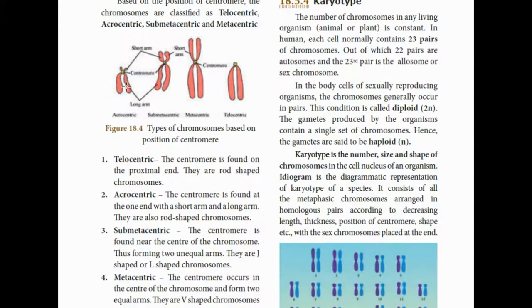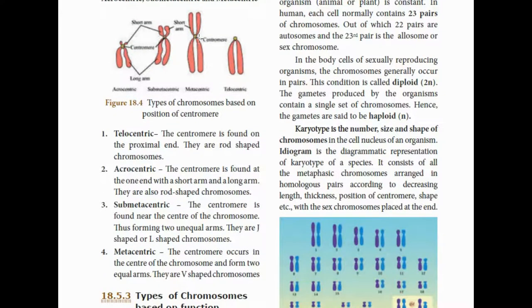Next is submetacentric. In submetacentric chromosomes, the centromere is slightly off-center, shifted a little from the middle. That is submetacentric. These are J-shaped or L-shaped chromosomes.